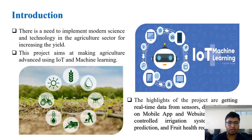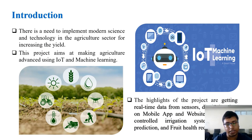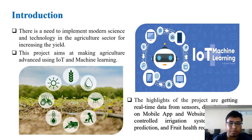Agriculture has seen many revolutions — from the domestication of animals and plants thousands of years ago, to systematic crop rotations, and then the Green Revolution with systematic breeding and widespread use of man-made fertilizers. We suggest that agriculture is now undergoing a fourth revolution, triggered by exponentially increasing use of information and communication technology, creating a need to implement modern science and technology in the agriculture sector to increase yield.